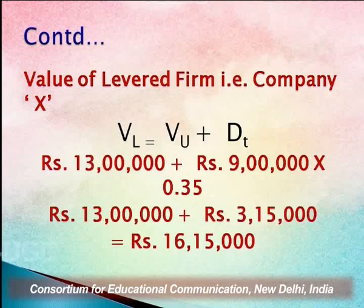We can verify the answer easily: the levered firm, company X, has a value of Rs.16,15,000, which is greater than the unlevered firm, company Y, at Rs.13 lakhs — exactly as directed by the MM approach, which says the value of the levered firm must be greater than that of the unlevered firm. Part 1 of the question is complete.